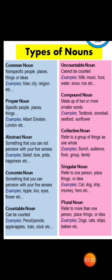Next is compound noun. What is a compound noun? Compound noun is made up of two or more smaller words. For example, textbook, snowball, seafood, sunflower.